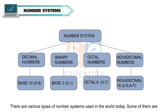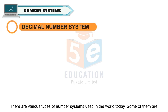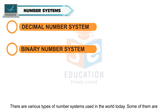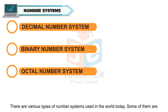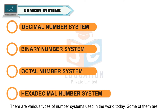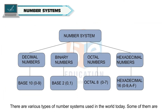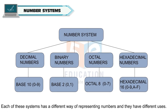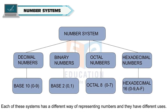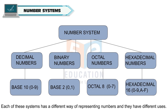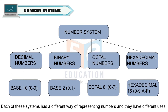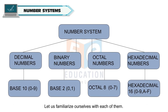There are various types of number systems used in the world today. Some of them are the decimal number system, binary number system, octal number system, and hexadecimal number system. Each of these systems has a different way of representing numbers and they have different uses. Let us familiarize ourselves with each of them.